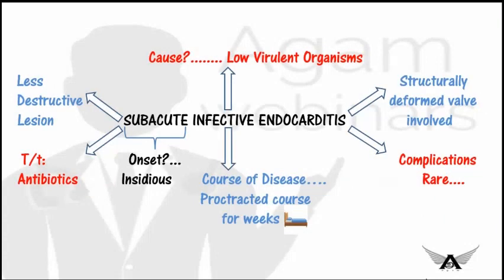Sub-acute infective endocarditis has features typically opposite to acute IE. It is insidious in onset and mainly occurs in abnormal or deformed heart valves. The infection is caused by low-virulent organisms such as Streptococcus viridans or Staphylococcus epidermidis. The lesion is less destructive; the disease progresses over weeks to months, the patient survives more than 6 months, and can be cured with antibiotics. Complications are typically rare due to the low virulence.